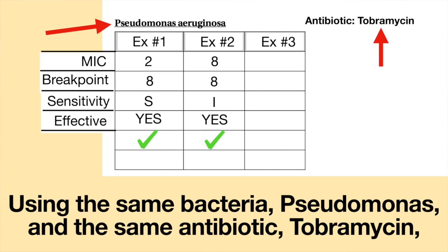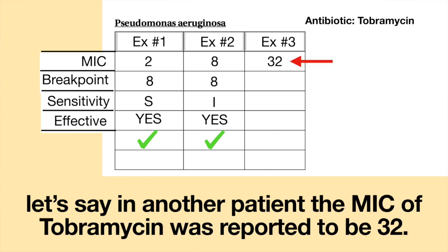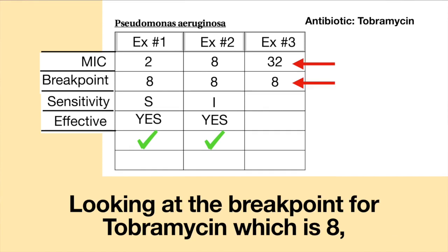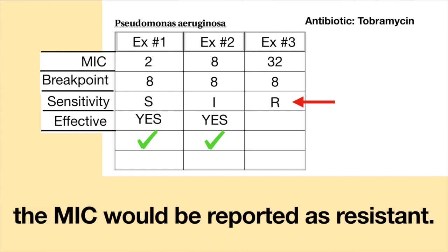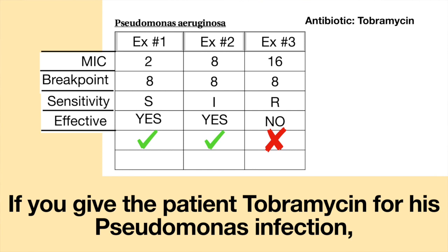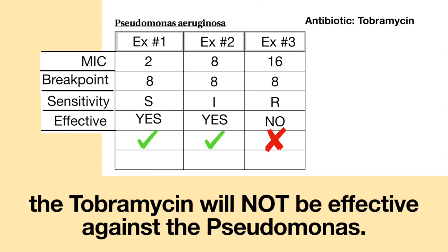Example number three: using the same bacteria, Pseudomonas, and the same antibiotic, Tobramycin — in another patient, the MIC of Tobramycin was reported to be 32. Looking at the breakpoint for Tobramycin, which is eight, the MIC would be reported as resistant. If you give the patient Tobramycin for a Pseudomonas infection, the Tobramycin will not be effective against the Pseudomonas.